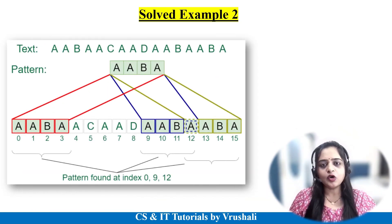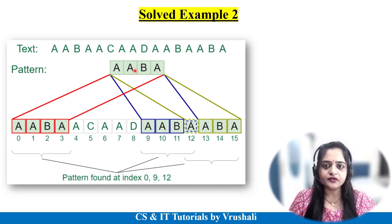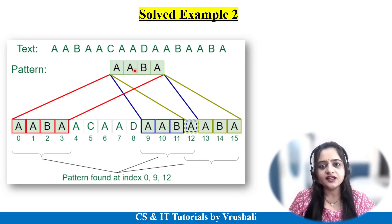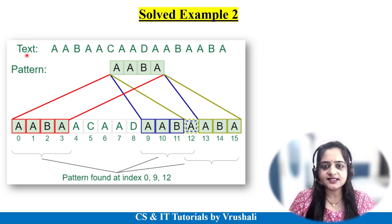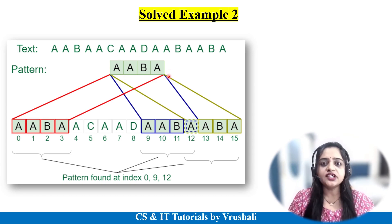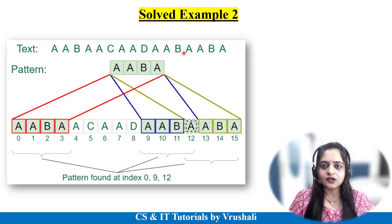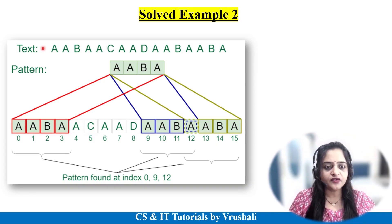This is the second example of naive string matching. Sometimes in your exam they ask this kind of question when your pattern is present in the text more than one time. A text is given and the pattern P = AABA. You have to find out the shift values at which this pattern is present in the text. Solving step-by-step: A matches the first A, and the full pattern AABA is found — so the pattern is found at index number 0.